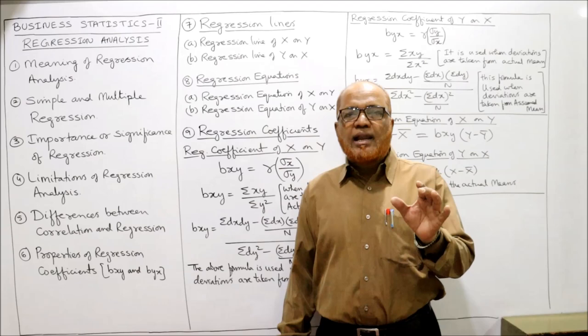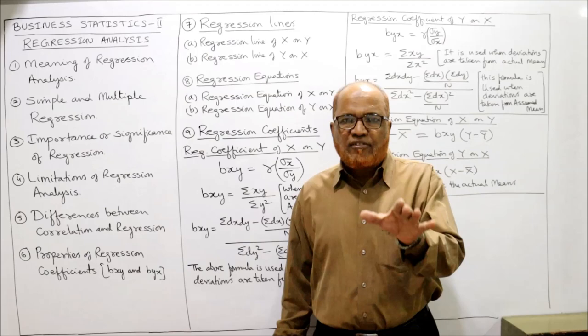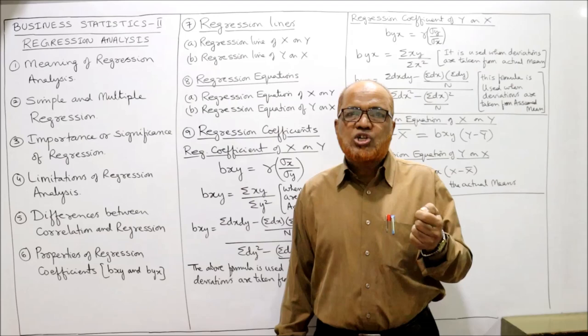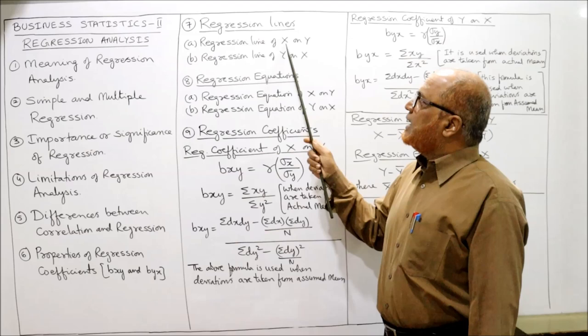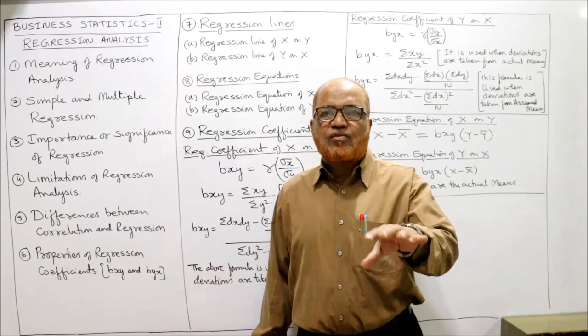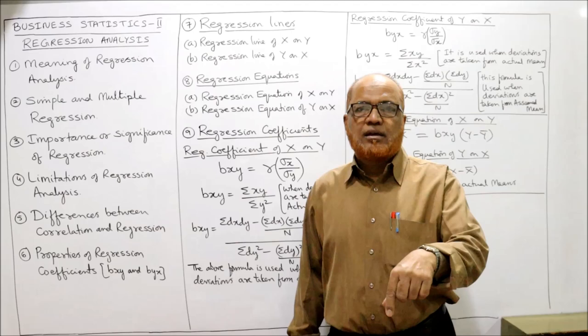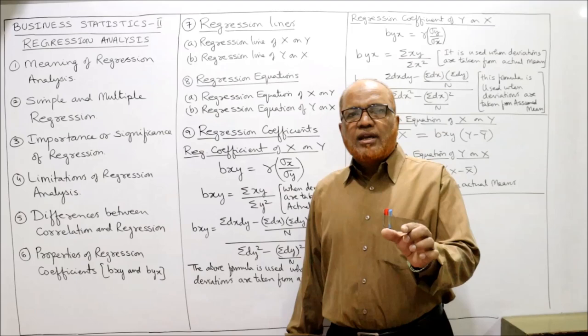A regression line is a graphical presentation of the relationship between two variables. When we plot the data on graph paper, we get a straight line denoting the average relationship between the two variables. The regression line of x on y is used to predict x for a given value of y, and the regression line of y on x is used to predict y for a given value of x.